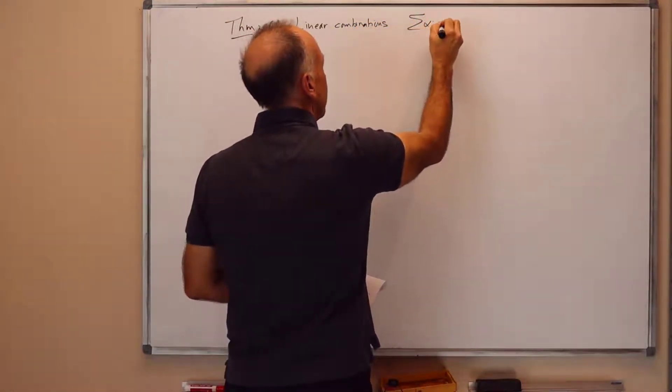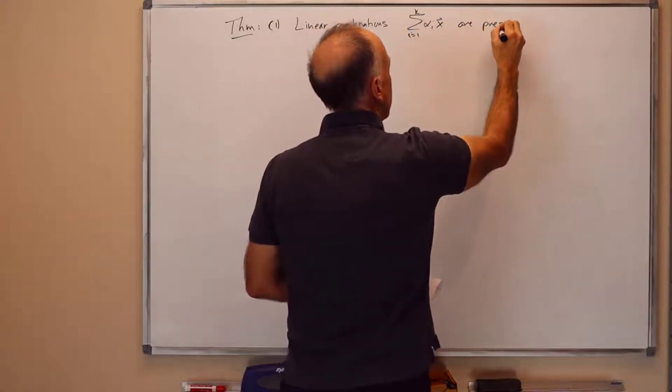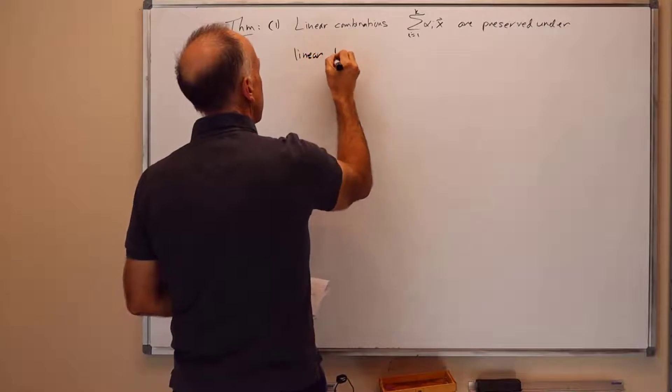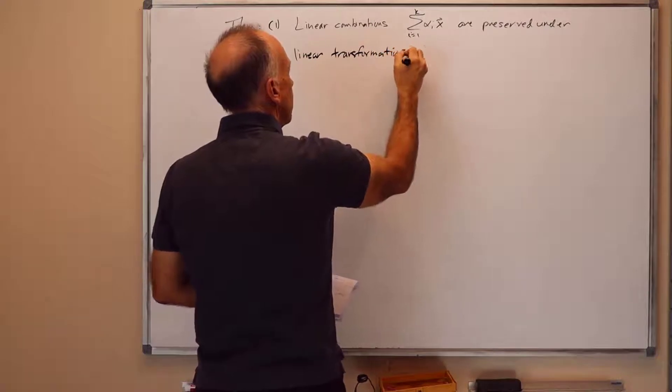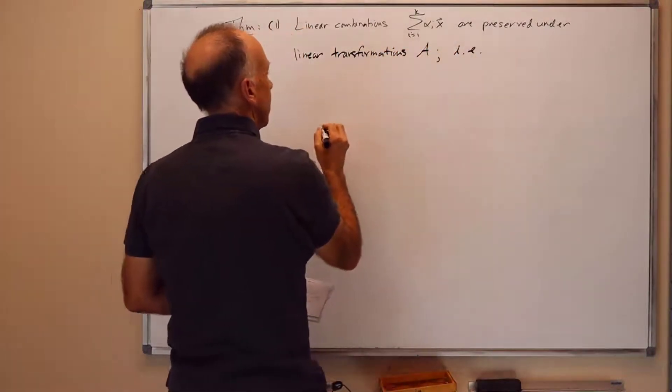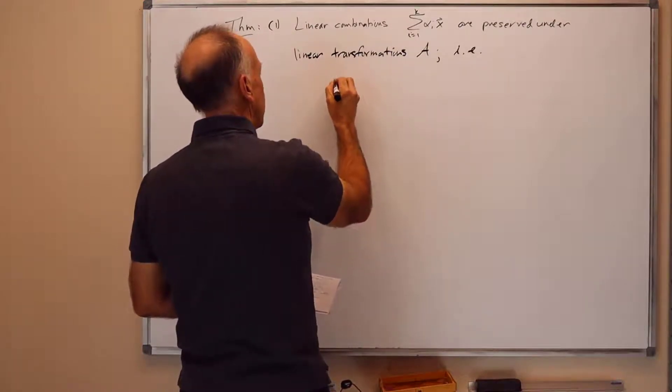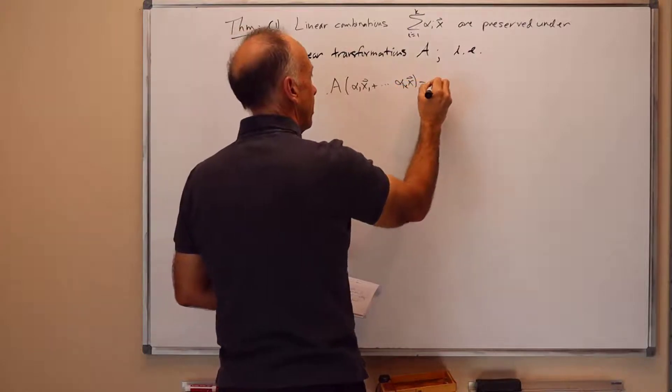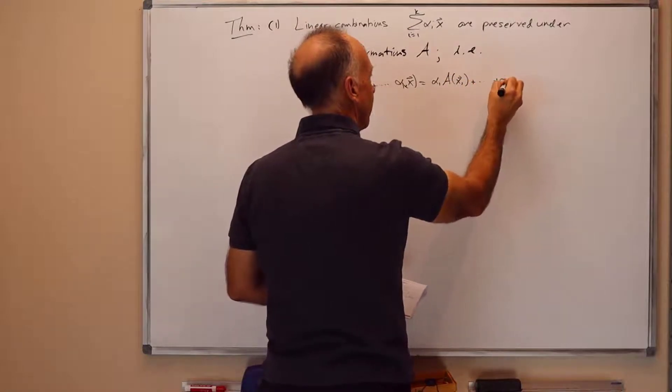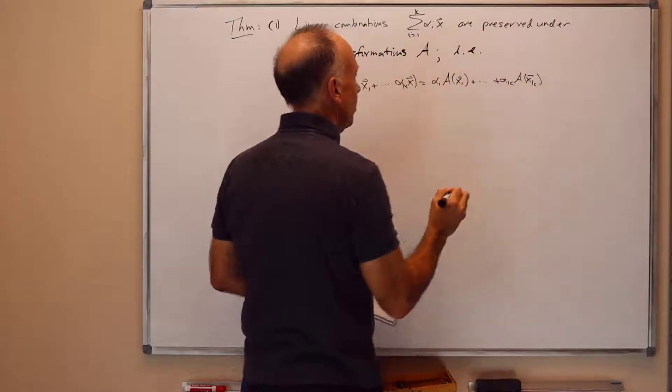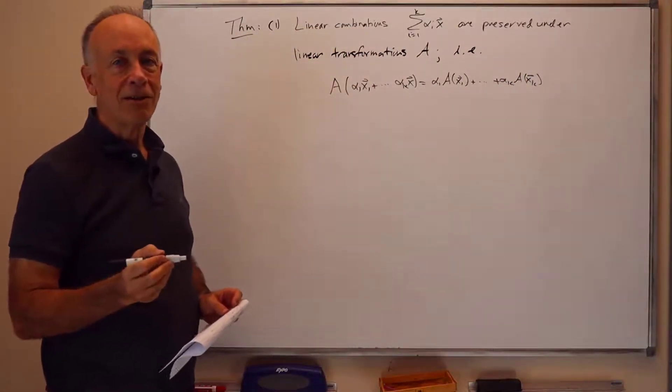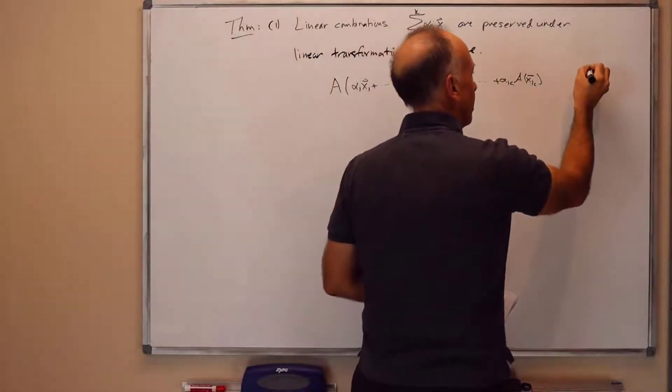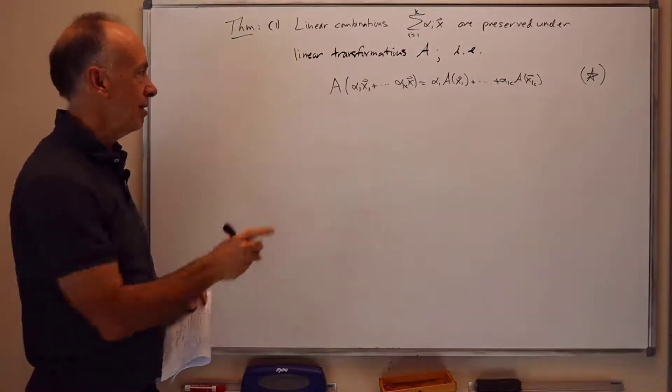Of the form the summation alpha i xi, i equals 1 to k, are preserved under linear transformations. What this means is the following, is that the following holds for all values of alpha i: A of alpha 1 x1 plus dot dot dot alpha k xk equals alpha 1 A of x1 plus dot dot dot alpha k A of xk. And this property is just immediate from the definition of linear transformations, that linear transformations respect multiplication by scalar and respect summation. So let's call this property star. But this was actually essentially the definition of what a linear transformation was, that it satisfied this kind of property.